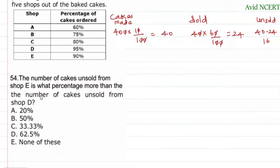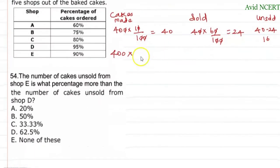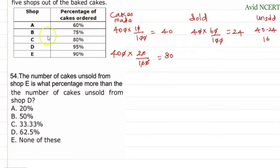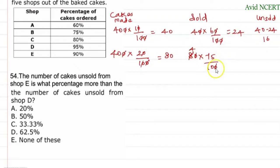For shop B: 400 × 20/100 = 80 cakes made. The percentage of cakes ordered from shop B is 75%, so cakes sold = 80 × 75/100 = 60. The unsold cakes = 80 − 60 = 20.